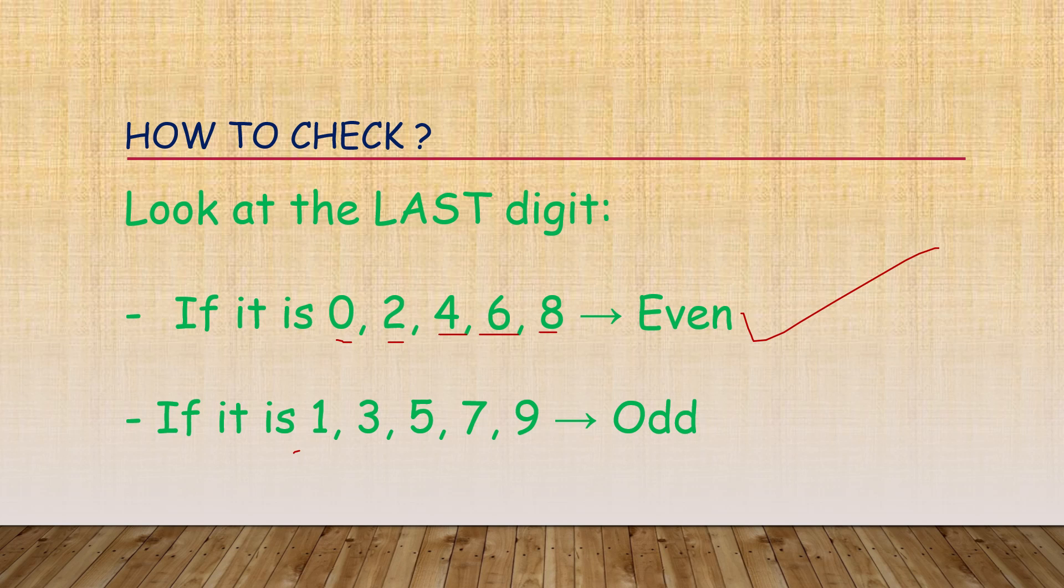If it is 1, 3, 5, 7, or 9, it becomes an odd number.